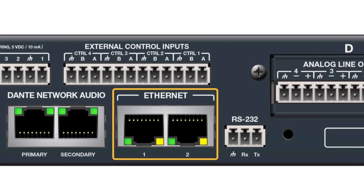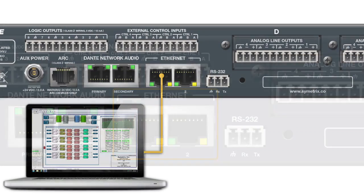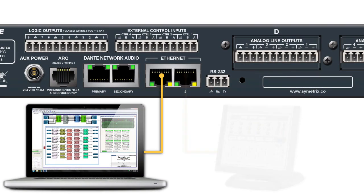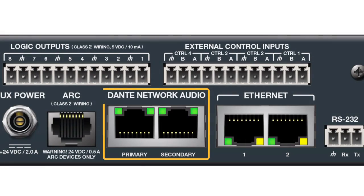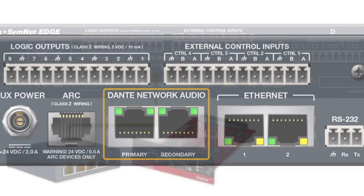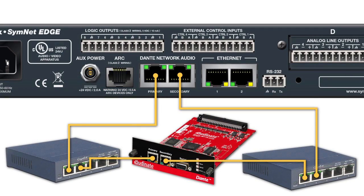Ethernet is the standard 10/100 RJ45 connection used for configuration, operation, and third-party control. Two Gigabit RJ45 connections provide primary and secondary Dante interfaces for fully redundant audio networking.